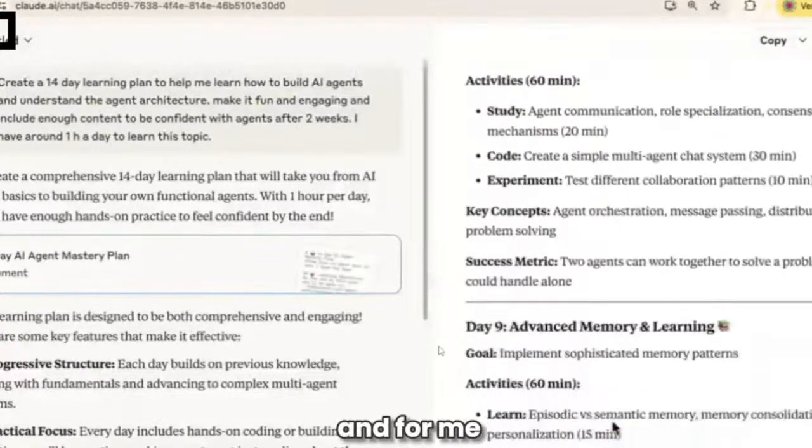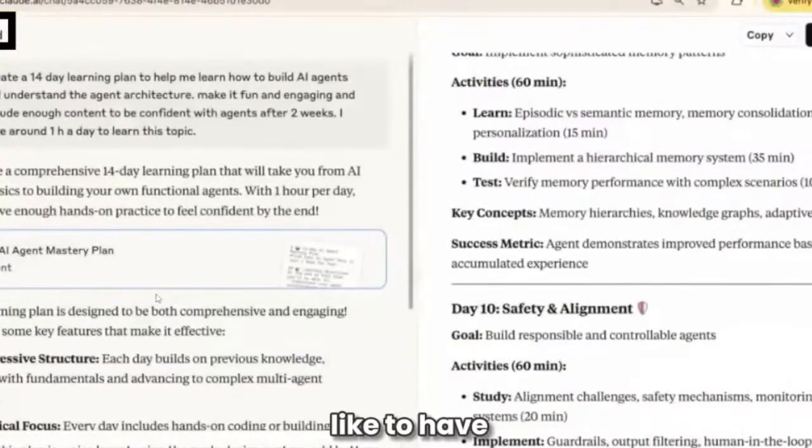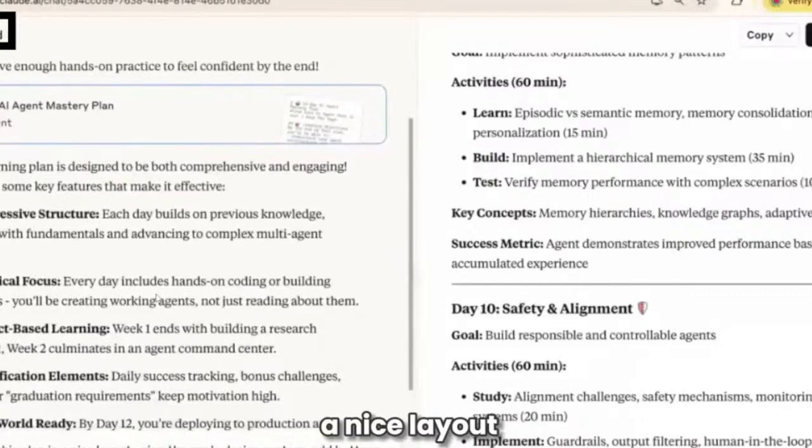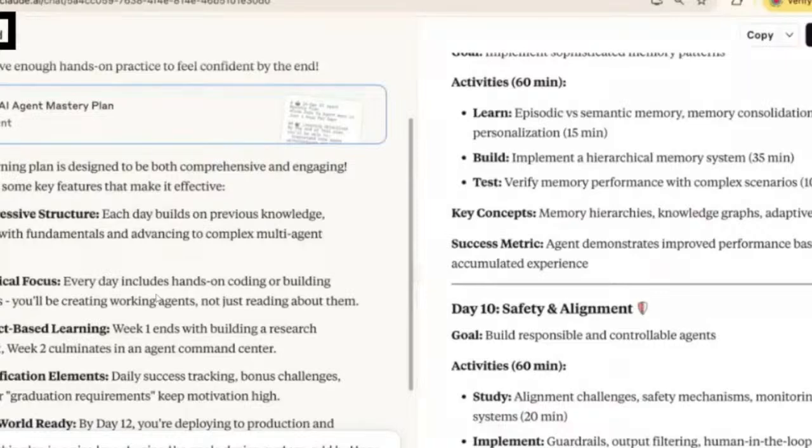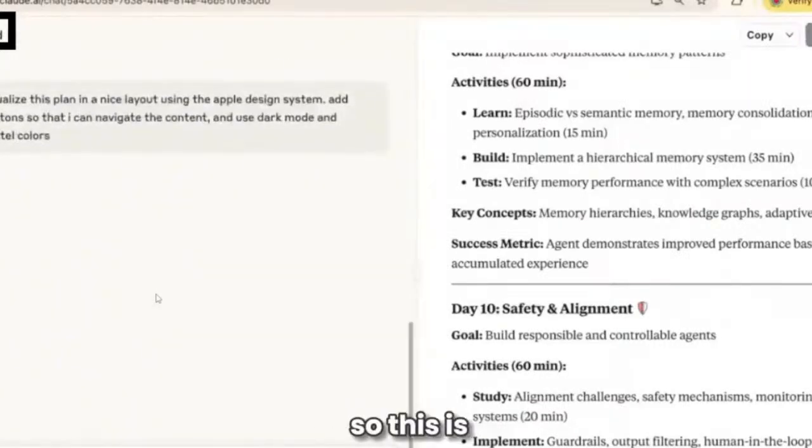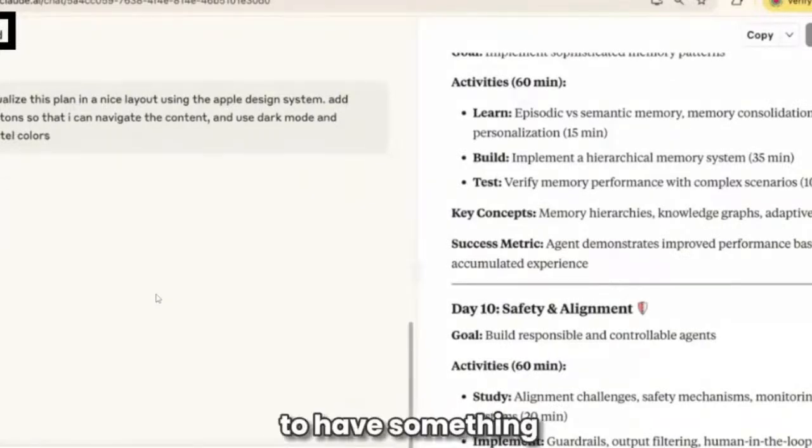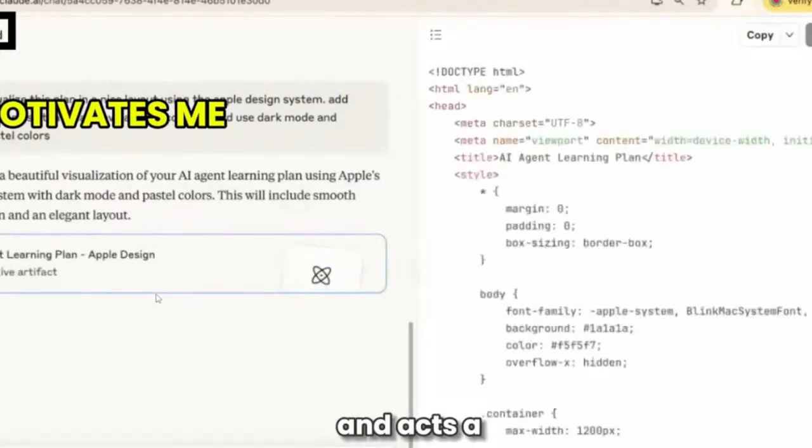For me it looks very good, but I would like to have a better visualization. So I ask AI to visualize this plan in a nice layout using the Apple design system, add buttons so that I can navigate the content, and use dark mode and pastel colors. This is an extra step—you don't need to do it, this is already good enough—but I want to have something that motivates me.